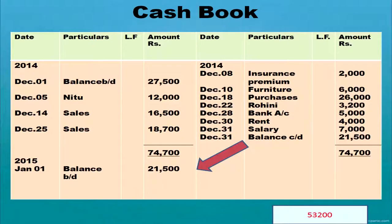When preparing the complete cash book, you write the opening balance, all receipts on the debit side, and all payments on the credit side. Then you must total and balance the cash book. You total both sides — the debit side total came to 74,700 and the credit side total came to 53,200. There is a shortage on the credit side amounting to rupees 21,500. Write the biggest total — 74,700 — on both sides, then show the difference of 21,500 on the side where there is shortage.